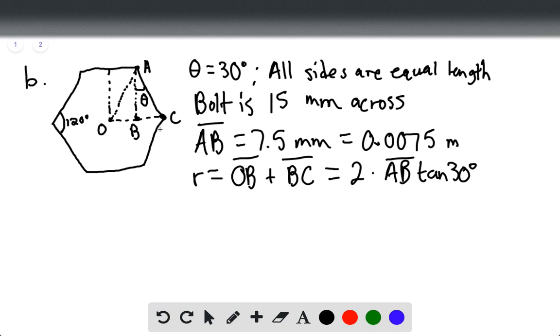So that means that R is going to be equal to 2 times AB tan of 30 degrees. So if we were to plug this in, this will be 0.0075 tan of 30 degrees times 2. And this is going to equal 0.00866 meters.